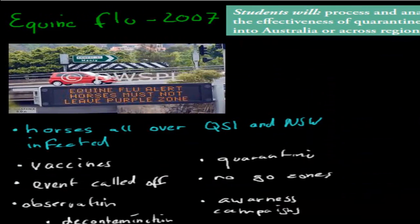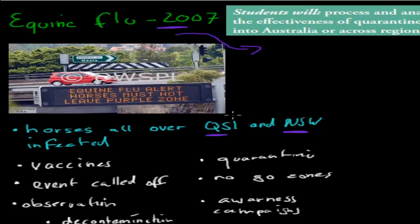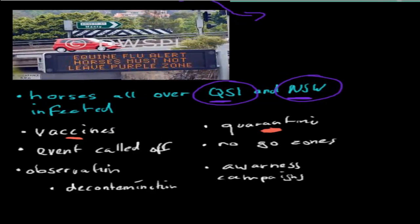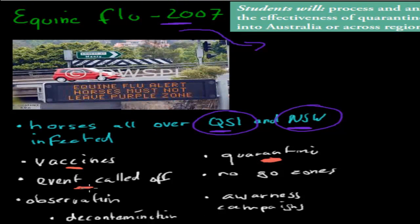An example of this is the equine flu in 2007. This flu managed to get past our quarantine measures and it affected horses all over Queensland and New South Wales. As soon as it happened in 2007, a lot of horses in Queensland and New South Wales were infected. We put all infected horses into quarantine, which means they weren't allowed to leave at all. We had vaccines for horses which might be infected, and we looked at all horses in the area and gave them vaccines for that type of equine flu to lower the chance of further infection. We also had events called off, such as horse races where lots of horses would meet.